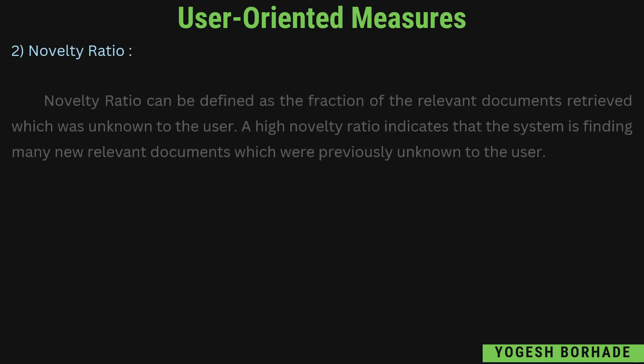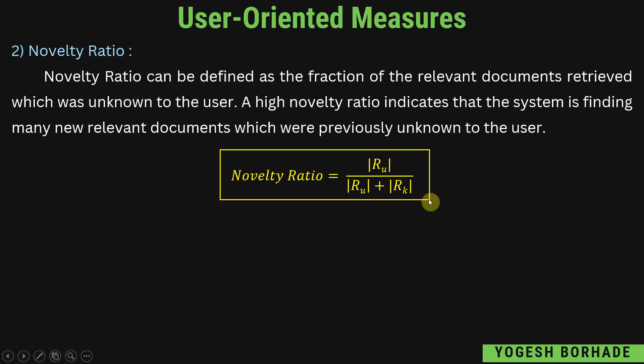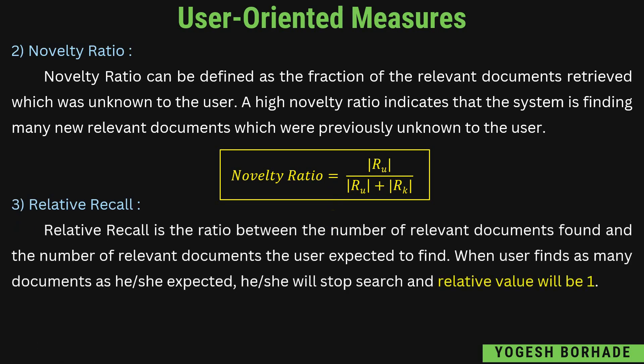Novelty ratio is defined as the fraction of relevant documents retrieved which were unknown to the user. A high novelty ratio indicates that the system is finding many new relevant documents previously unknown to the user. The formula is mod of R(u) divided by mod of U plus mod of R(k). Next, relative recall is the ratio between the number of relevant documents found and the number of relevant documents the user expected to find. When the user finds as many documents as expected, they will stop searching and the relative recall value will be 1. The formula is mod of R(k) plus mod of R(u), divided by mod of U.